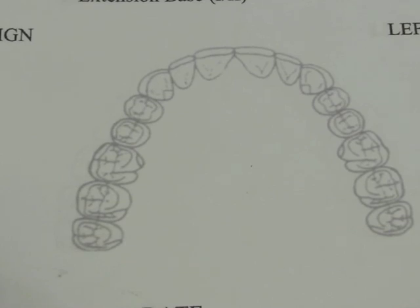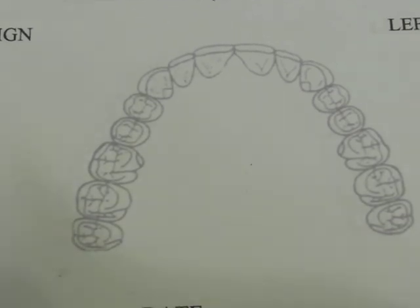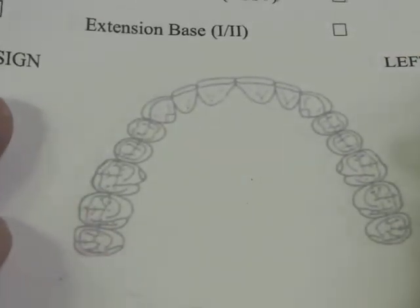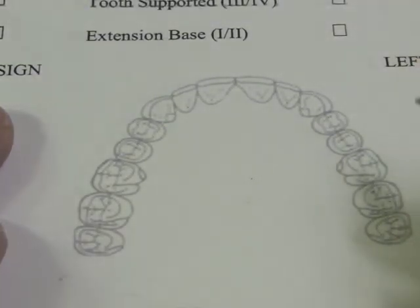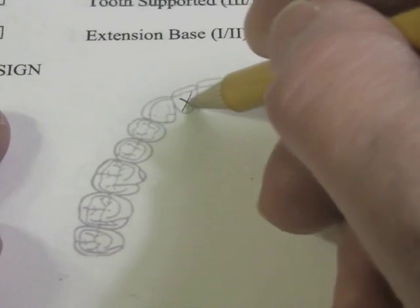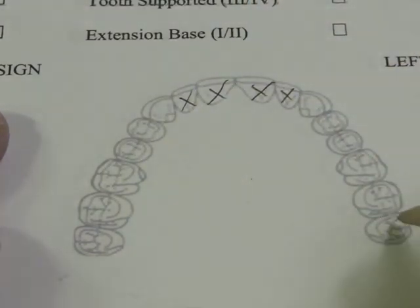Let's transfer our design to a piece of paper for our tentative design sheet. You'll be doing this for any clinic case that you're treatment planning. First thing we're going to do is cross off the teeth that are missing on our cast.